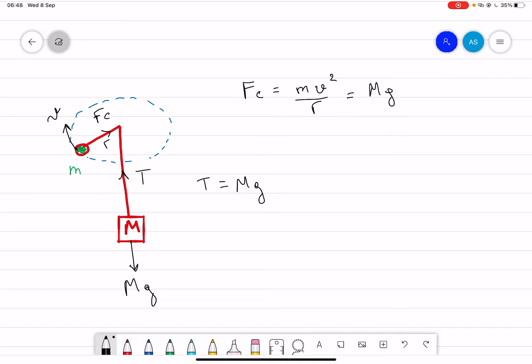And from here, we just have to find v, which is mgr divided by m under the square root. So that's it. If you plug in the numbers, you should get the answer.